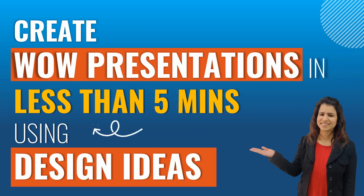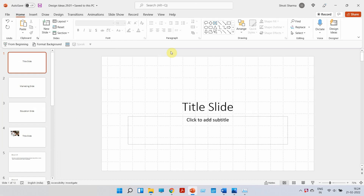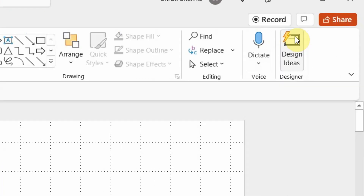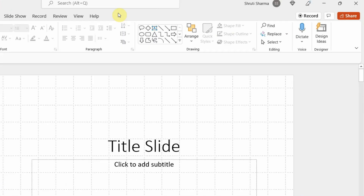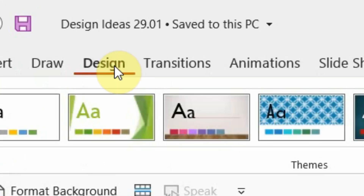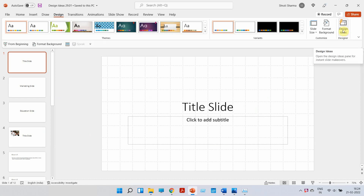Without any further delay, let's begin. Let me first show you where the Design Ideas tab is. Click on the Home button and you will see the Design Ideas tab on the extreme right. Otherwise, click on the Design button and you will see it at the same location.